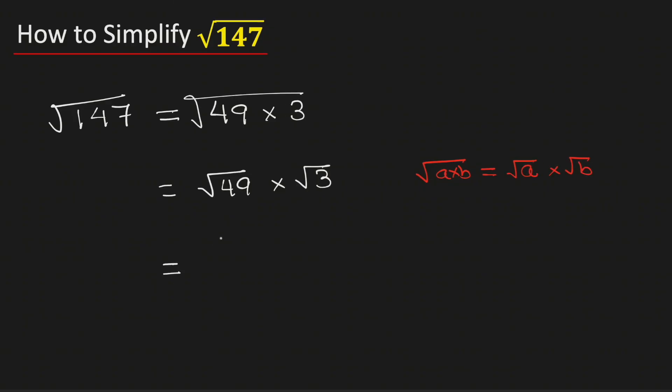Now we know that square root of 49 is equal to 7, and root 3 cannot be simplified further. Multiplying we get 7 root 3.